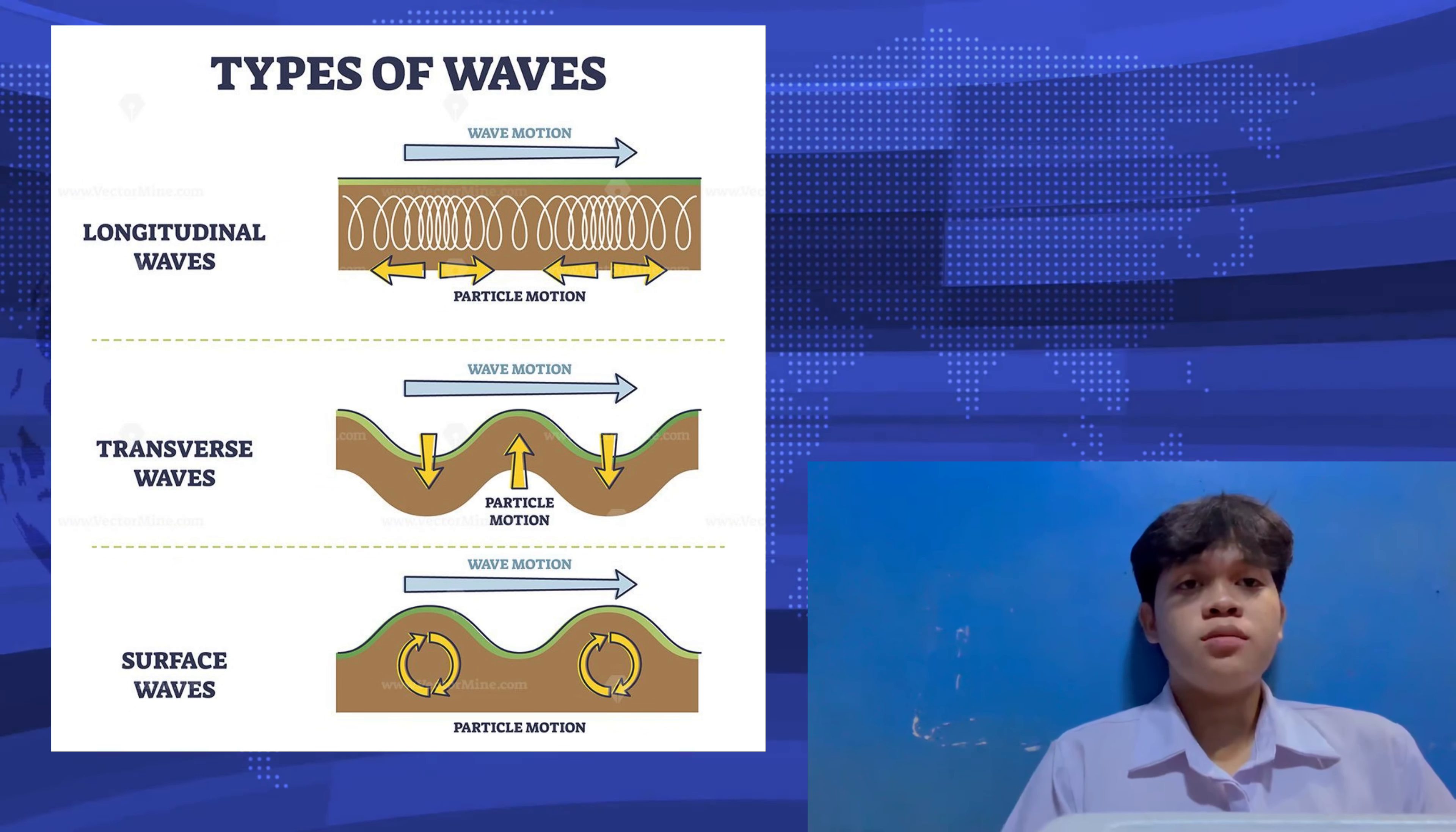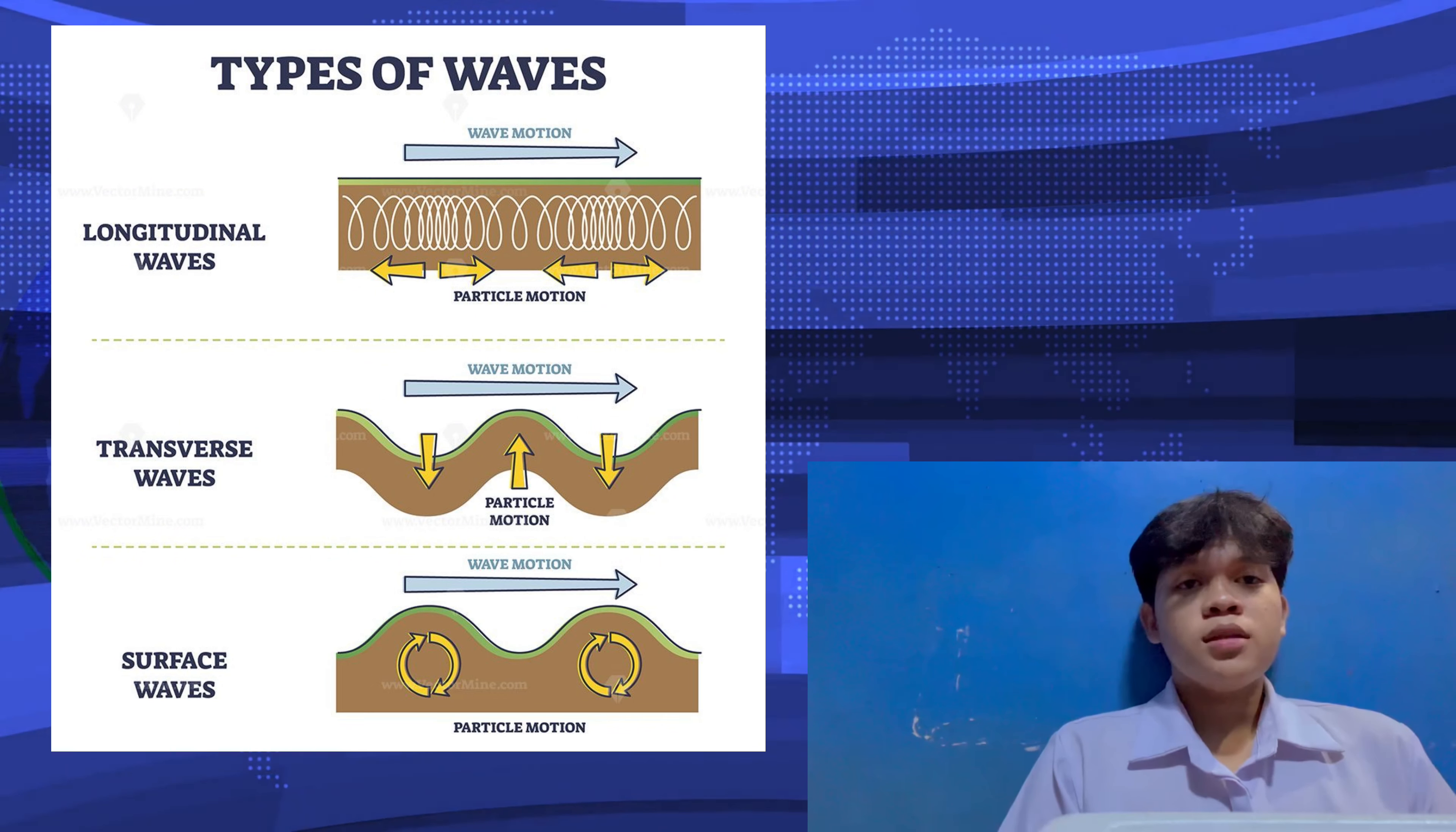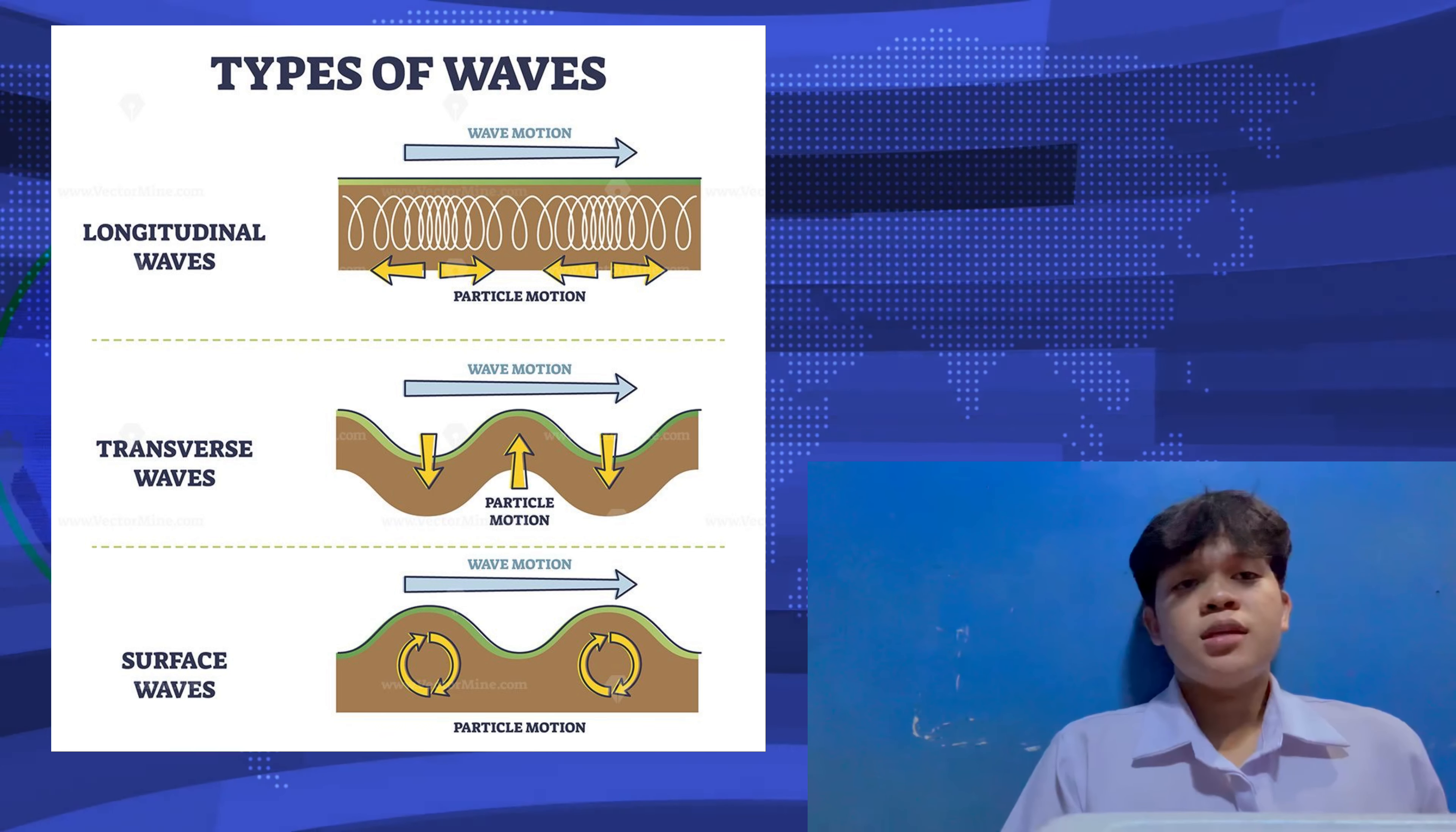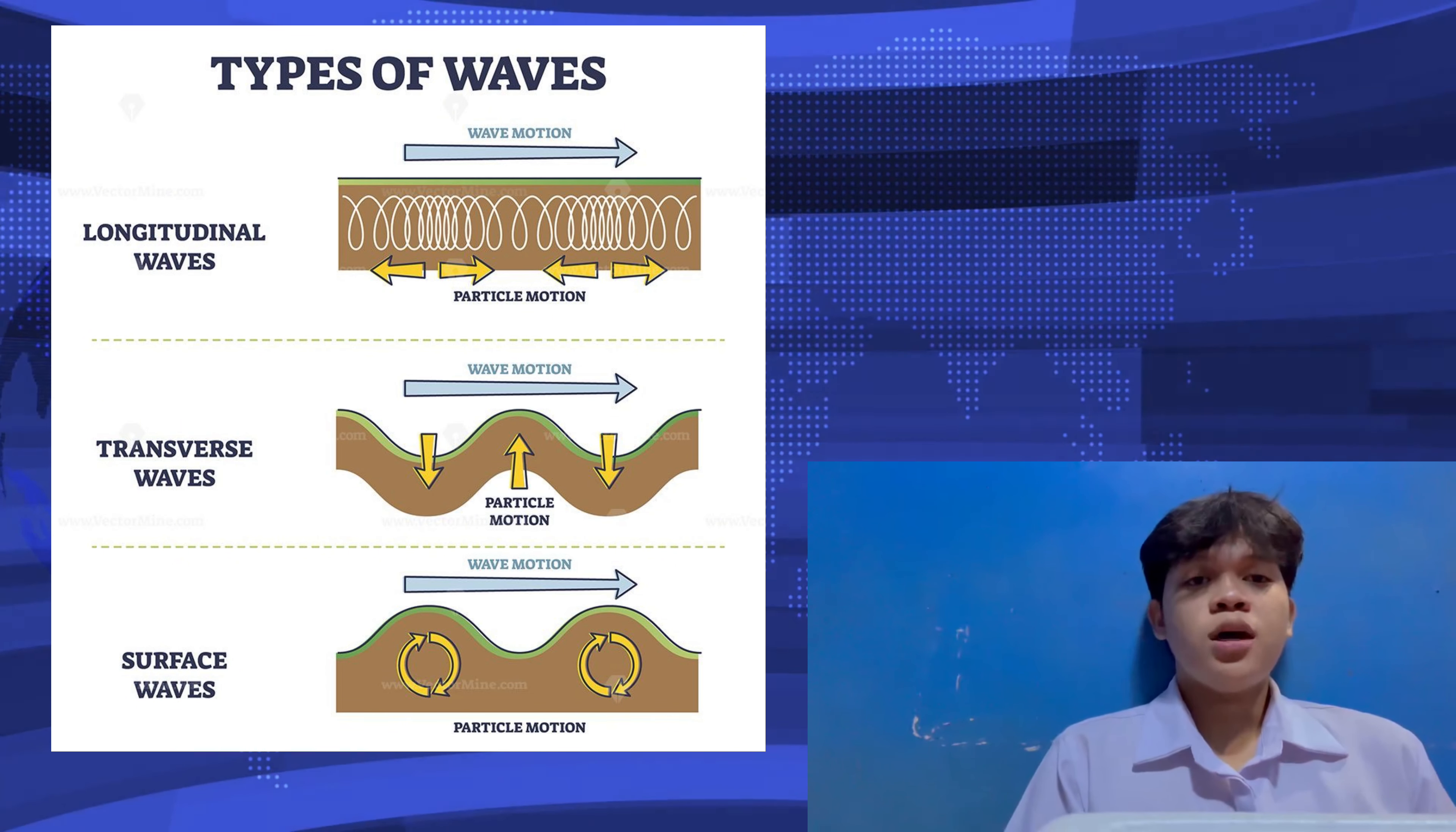Seismic waves travel through the earth in different ways, depending on the type of material they encounter. When these waves pass through rock, they move relatively quickly. However, when they encounter softer materials like sediment, they slow down. This variation in speed helps scientists map the earth's internal structure by analyzing how the waves change as they travel.